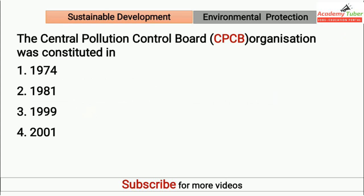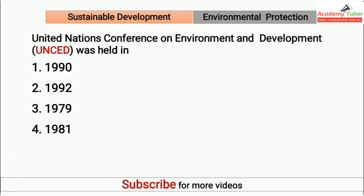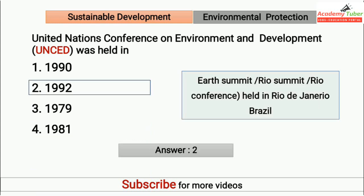The Central Pollution Control Board organization was constituted in? Answer is 1974. United Nations Conference on Environment and Development was held in? Answer is 1992. This conference is also known as Earth Summit, Rio Summit, and Rio Conference. It was held in Rio de Janeiro, Brazil.